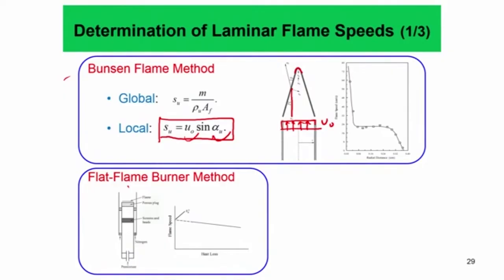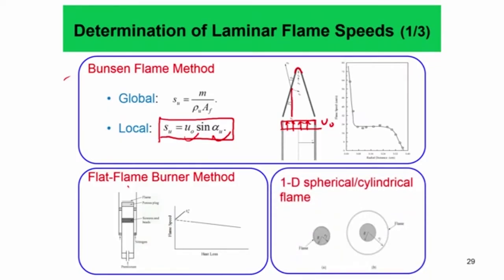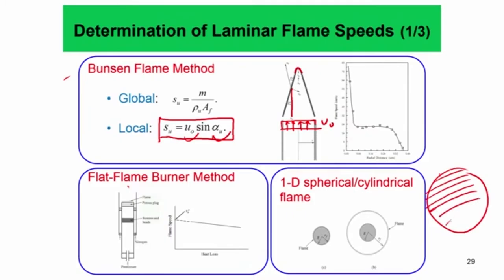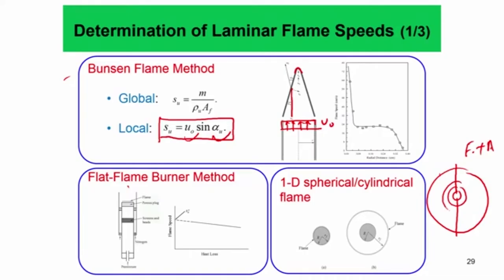This is how you estimate the flame speed, and there are other methods — for example, the porous plug burner method. You can have a porous plug to stabilize the flame a little bit upstream; it has some heat loss, but you can do many things to minimize the heat loss. This is just another method by which you can estimate the flame speed.